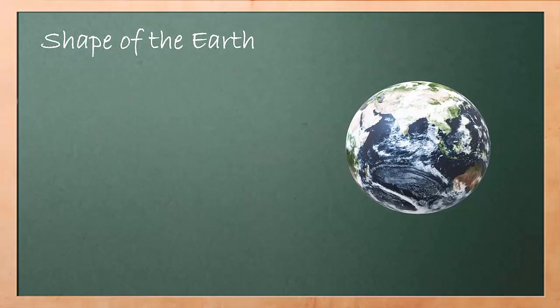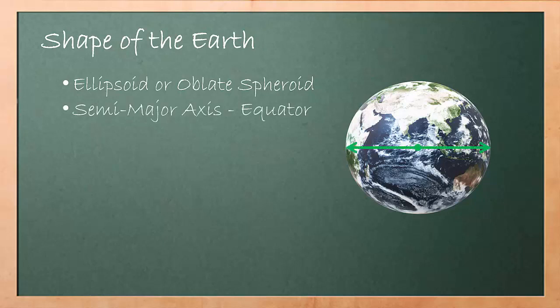The shape of the earth is known as ellipsoid or oblate spheroid. However, for navigation purposes, it can be considered as a sphere. The earth has two axes. Semi-major axis, also known as equatorial radius, is the distance from the earth center to equator, marked by the green line.